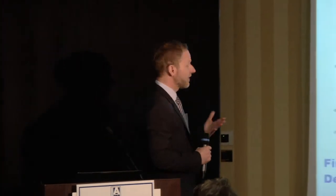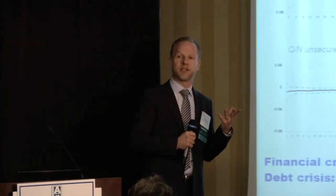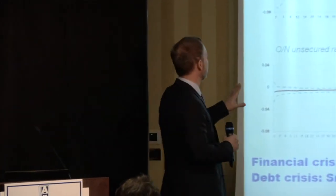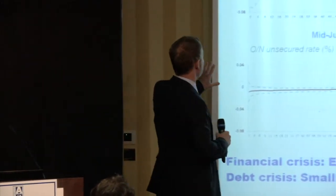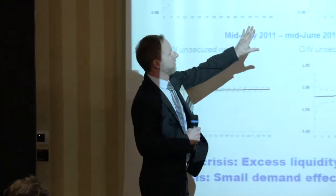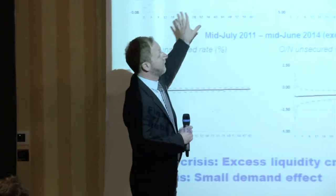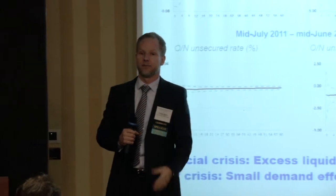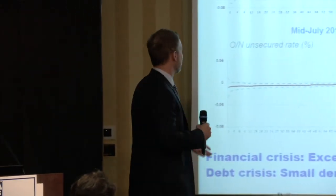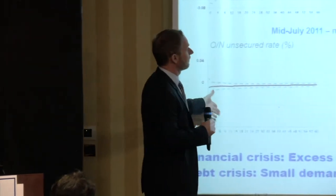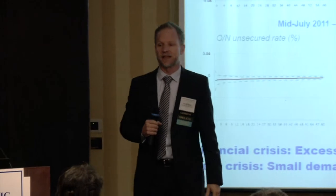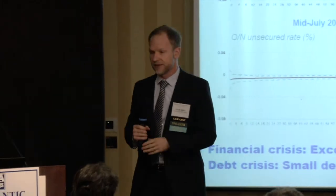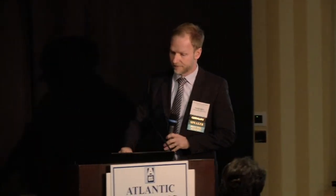Looking at Germany — a very non-stressed country — it looks exactly like the euro area on average. The public supply of liquidity crowds out private demand, and by the time the sovereign debt crisis comes, German banks are awash with liquidity and there's not that much more going on.